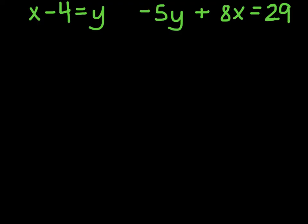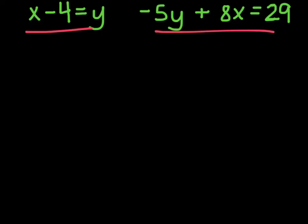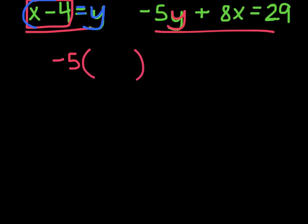Let's look at one more example. I have two equations: this first one has y equals something, which makes it a good candidate for substitution. Where the y is in the other equation, I'm going to plug in x minus 4. Rewriting: negative 5 times (x minus 4) plus 8x equals 29.